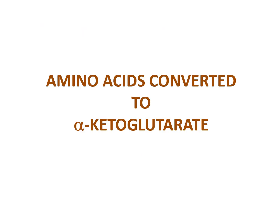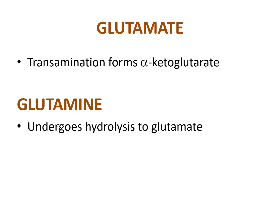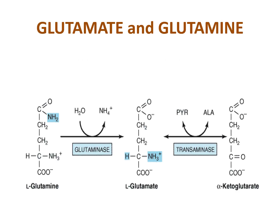Amino acids converted to alpha-ketoglutarate include glutamate, whose transamination forms alpha-ketoglutarate, and glutamine, which undergoes hydrolysis to form glutamate. Glutamine is metabolized to L-glutamate, which is then transaminated to form alpha-ketoglutarate.